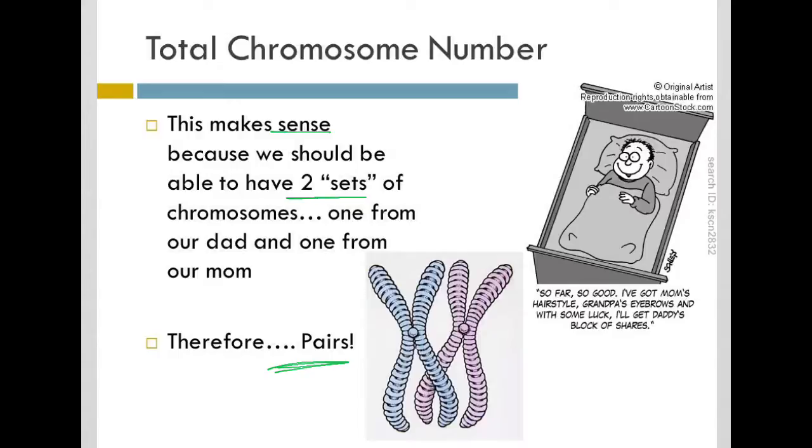One of the pair came from my dad, let's just call this the blue pair, and one of the pair came from my mother. And so I got one chromosome number 1 from my mom, one chromosome number 1 from my dad, and therefore I have a pair of chromosomes numbered 1.